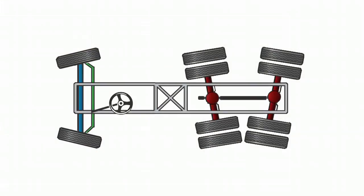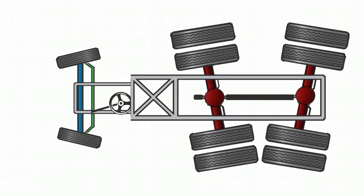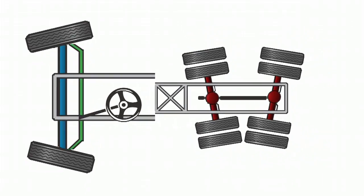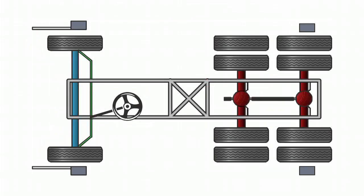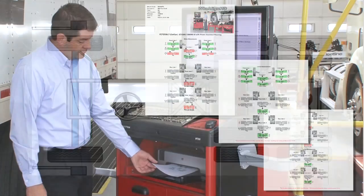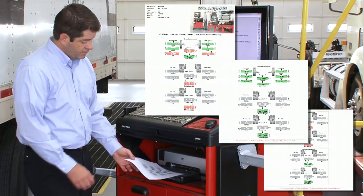In summary, the vehicle came in with this alignment condition: tandem scrub at the rear and a toe error at the steer axle. Now everything is straight, and you can print a report to prove the work was done correctly.